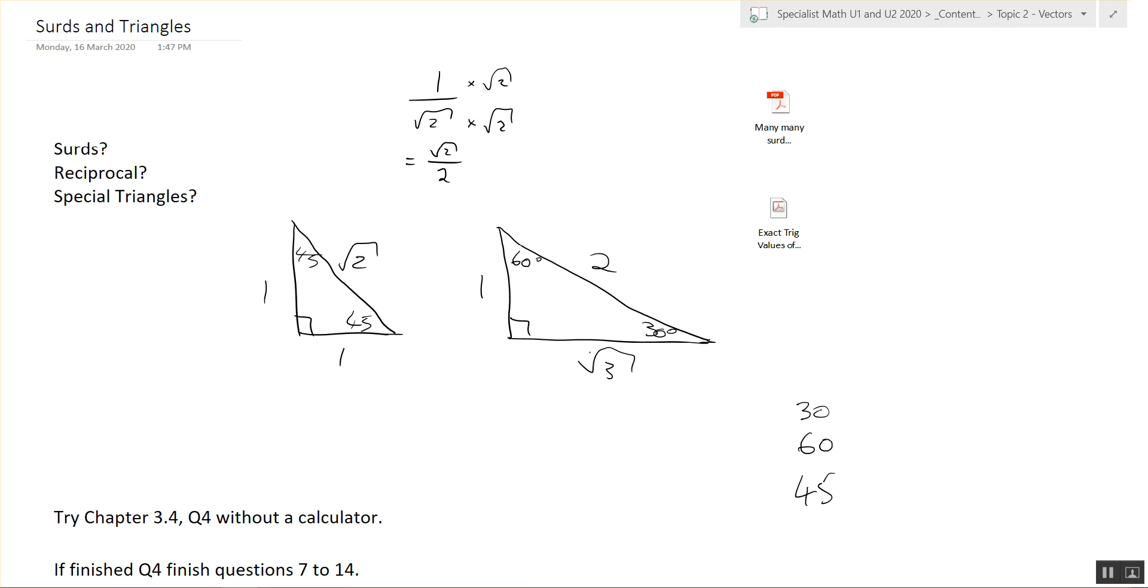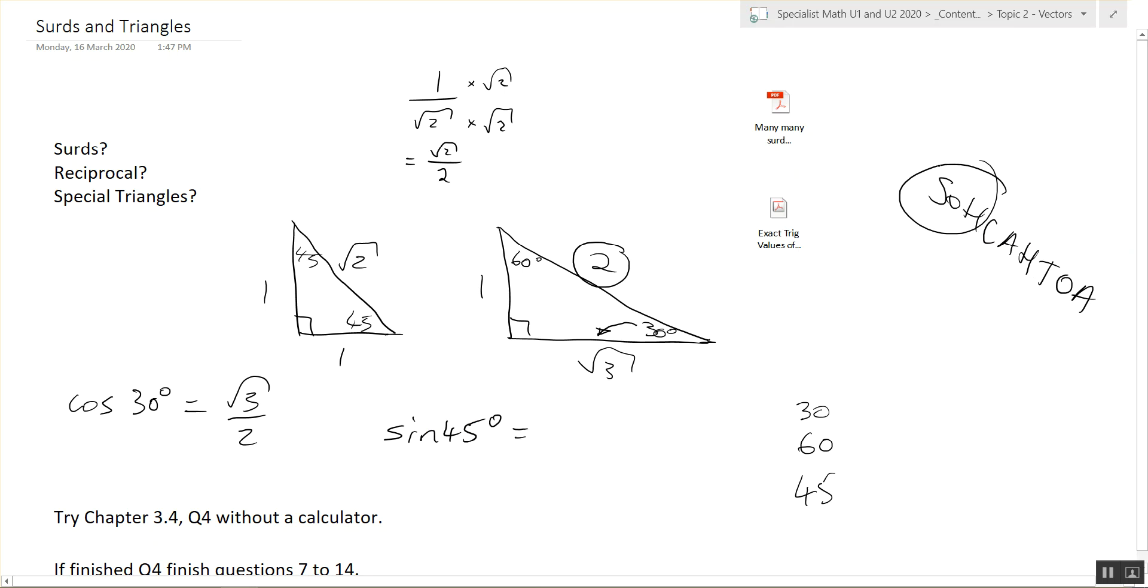Okay, so we've got some surds on our special triangles. So if I said cos 30 degrees, what would we do? We would use SOHCAHTOA. So CAH is adjacent over hypotenuse. The adjacent of 30 is square root 3. Thus we have the exact value of cos 30 degrees.